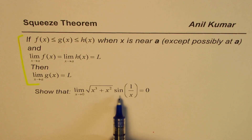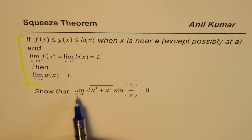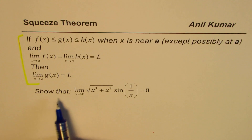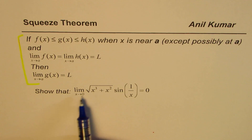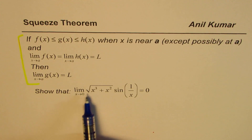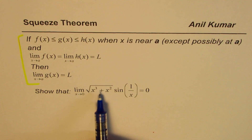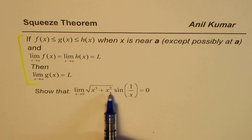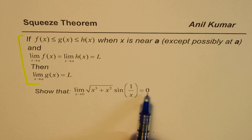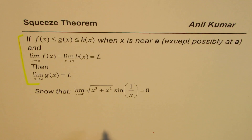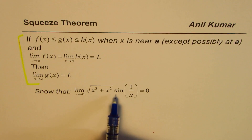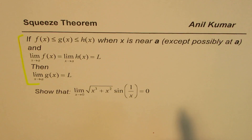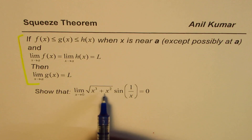Based on this theorem, many questions can be solved, especially with the sine and cosine functions. Here we have an example: we need to show that the limit as x approaches 0 for the function square root of (x³ + x²) times sin(1/x) is 0. We'll apply the squeeze theorem to solve this.